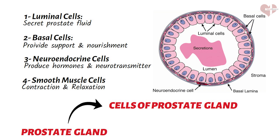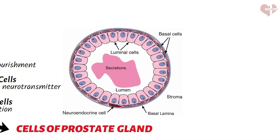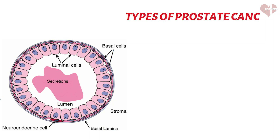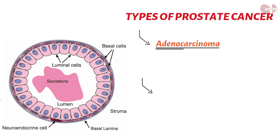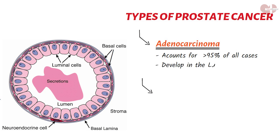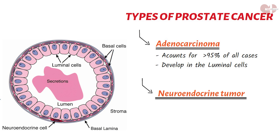Based on the type of cell affected, prostate cancer is divided into two main types. Adenocarcinoma is the most common type of prostate cancer, accounting for more than 95% of all cases. Adenocarcinomas develop in the glandular epithelial cells that produce seminal fluid. Neuroendocrine tumors are rare types of prostate cancer that develop from neuroendocrine cells in the prostate gland.